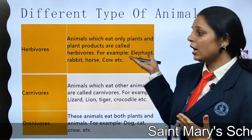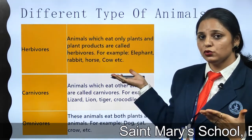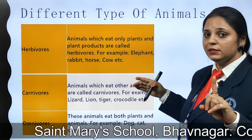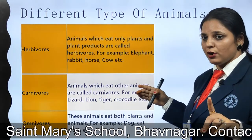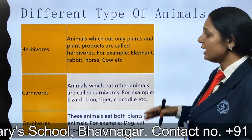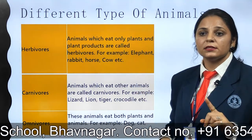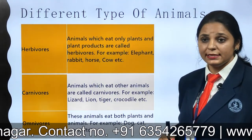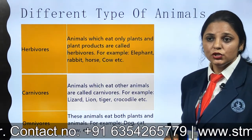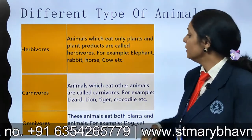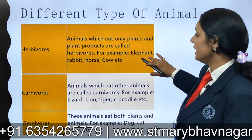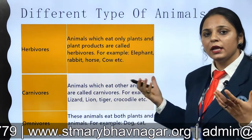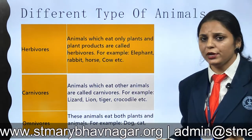Herbivores are animals which eat only plants and only plant products. What are the examples? These are elephant, rabbit, horse, cows, and many more.